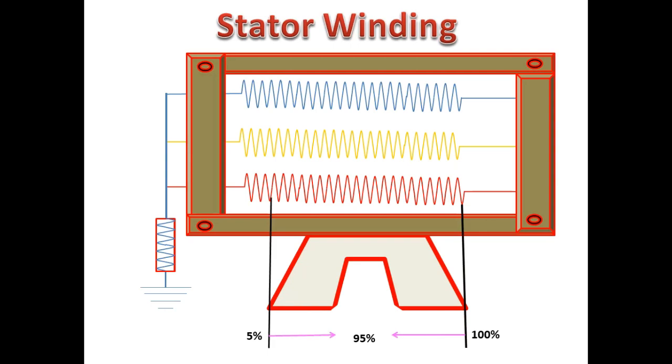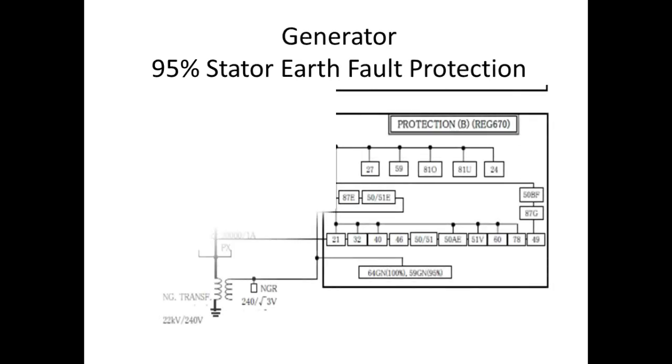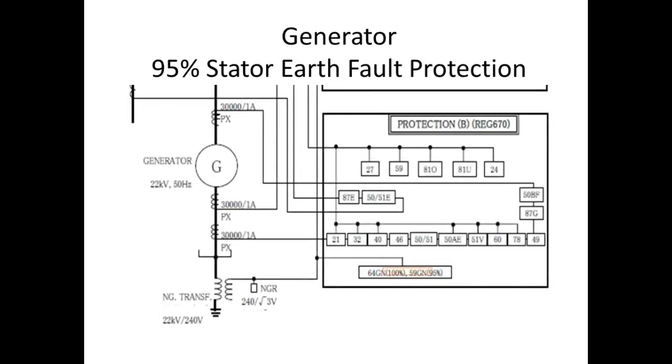Now we will see the single line diagram of the generator. In this, 95% of the winding fault signal is got from the NGT. Now I am going to elaborate this part alone.